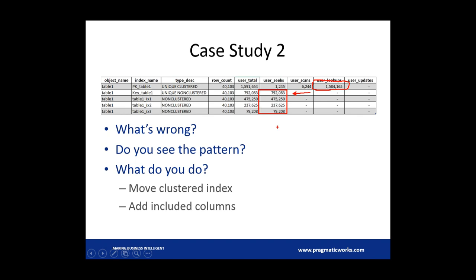In this kind of scenario there are two ways you can look at it. One is you can consider the fact that there's very few user seeks and very few scans, and in this case it might be good to move the clustered index to the second index. But you're going to want to take a deeper look at what the columns are. It is possible that you would want to move the clustered index and then maybe add additional columns into the other indexes for included columns.